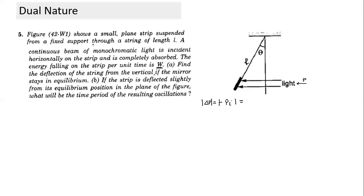Find the deflection of the strip from the vertical if it stays in equilibrium — it makes an angle theta. It is a surface which absorbs the light completely. Whenever light falls onto the surface it gets absorbed, and the change in momentum exerts a force.